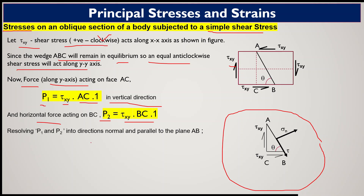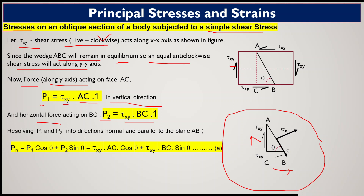We resolve these two forces P1 and P2 into directions normal and parallel to plane AB. Resolving P1 (vertical) and P2 (horizontal) into normal and tangential components: the normal force Pn = P1·cos(theta) + P2·sin(theta). Substituting the values of P1 and P2 gives equation A: Pn = tau_xy·AC·cos(theta) + tau_xy·BC·sin(theta).